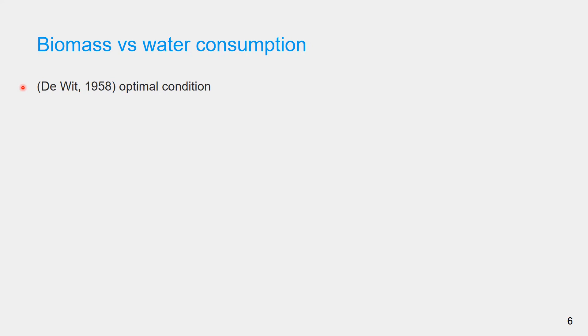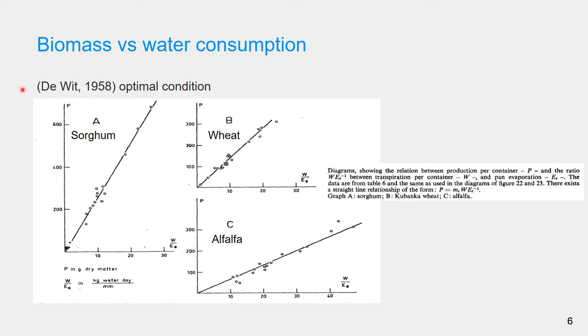David is among the pioneers to show the relationship between dry matter production in the y-axis and normalized transpiration in the x-axis which is linear under optimal condition. In his study transpiration was normalized by pan evaporation. David showed the linear relationship that passes through the origin to exist under optimal condition for different crops that includes sorghum, wheat and alfalfa.